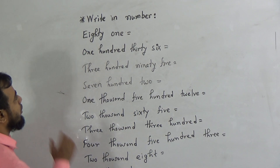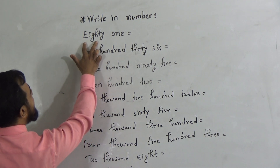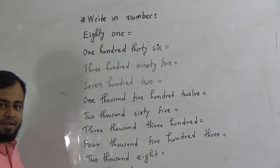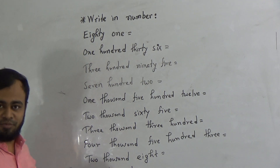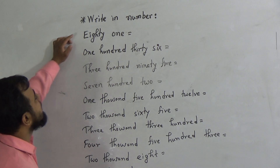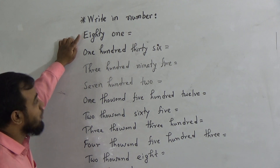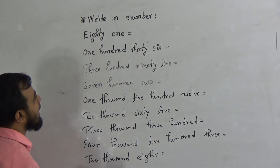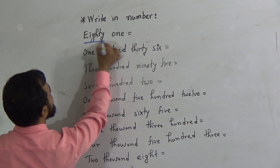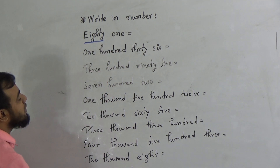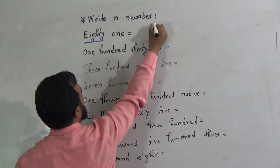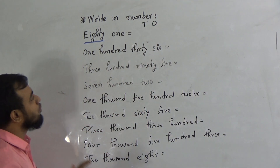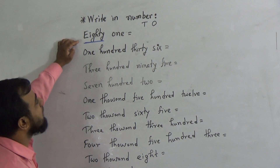How should we write down in number form? The first number given here is 81. I have written on the board 10 numbers and these 10 numbers are between 1 to 5000. Let's do this. First number is 81. To write down 81, first of all we need to identify which is the highest place value. 80 is the highest place value here. That means we need to write down the place value of 1s and 10s. Then there will be no confusion in the writing.